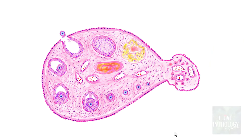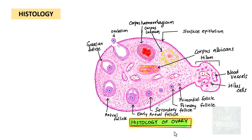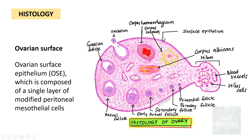Moving on to the histology of the ovary — it's very important to know because that's how we understand how ovarian tumors are classified. The first important component is the ovarian surface, which is lined by the surface epithelium — a single layer of modified peritoneal mesothelial cells that are flat to cuboidal to columnar in type.